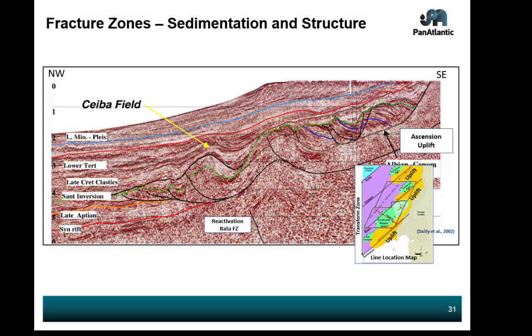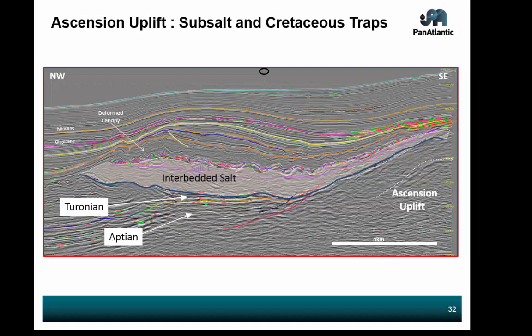This is one of our own prospects on Block K. We have Turonian and Aptian sediment down in here. We have the Ascension uplift, and here's part of the global structure. This is uplifted and thinner — we have salt sliding down. You can see the thickness changes. We also have a lead up in here, producing shallower prospects and deeper prospects. I think we can explain in general how they get there.